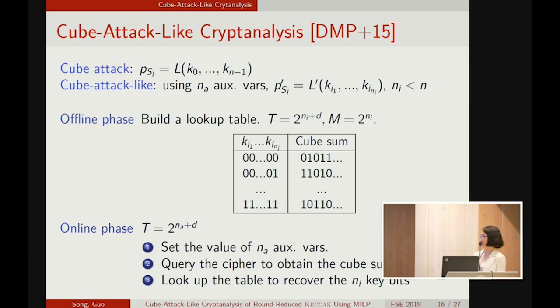This phase takes a time complexity of 2^(nI+D) and a memory complexity 2^nI. In the online phase, the attacker gets the value of the nA auxiliary variables and then queries the cipher to obtain the cube sum. With the cube sum, he looks up the table.